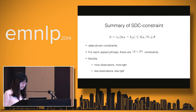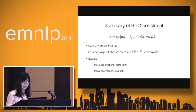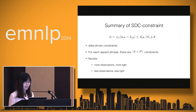In summary, the sentiment distribution consistency constraints are data-driven constraints, and there are many of them. For each aspect phrase, there are the number of aspects multiplied by the number of products such constraints. The constraints are very flexible: the more observations we get, the tighter and more informative the constraint; with fewer observations, less tight and less informative.